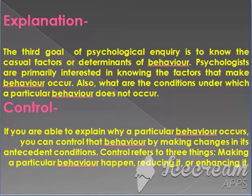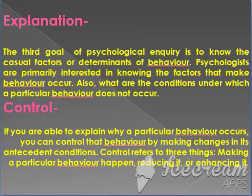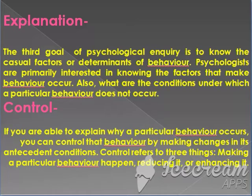The fourth goal is control. If you are able to explain why a particular behavior occurs, you can control the antecedent condition. Control refers to three things: making a particular behavior happen, reducing it, and enhancing it. For example, you can allow the number of hours devoted to study to remain the same, reduce them, or increase them. The change brought about in behavior by psychological treatment in terms of therapy is a good example of control.